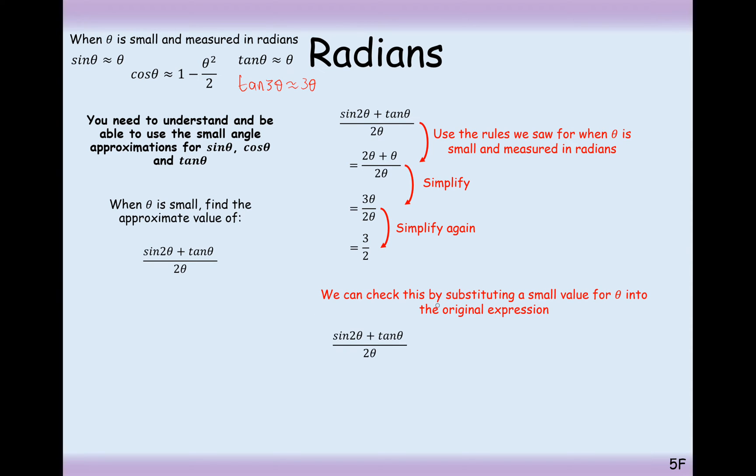We can check this by substituting a small value for theta into the original expression. Let's substitute in theta equals 0.005, and just to double-check that on your calculator, 1.4999, blah, blah, blah. So that's a very good approximate for theta is small. If theta was, say, pi by 2, this would be a rubbish approximation. So it's only very small values of theta you should be plugging in as theta.